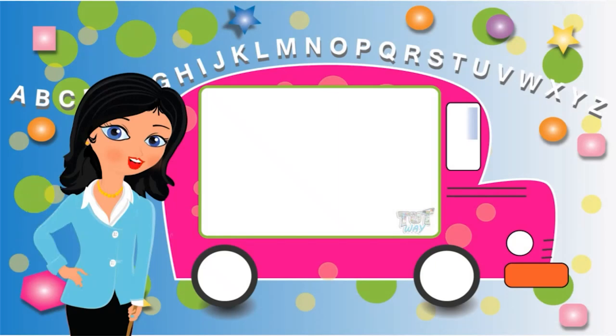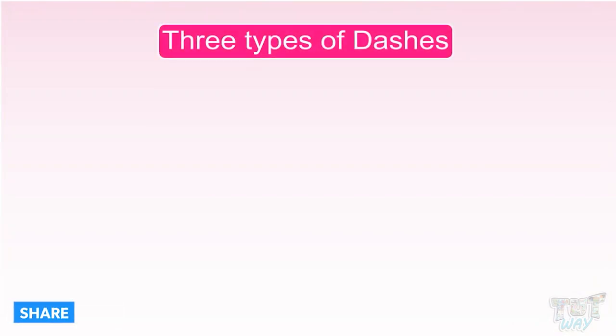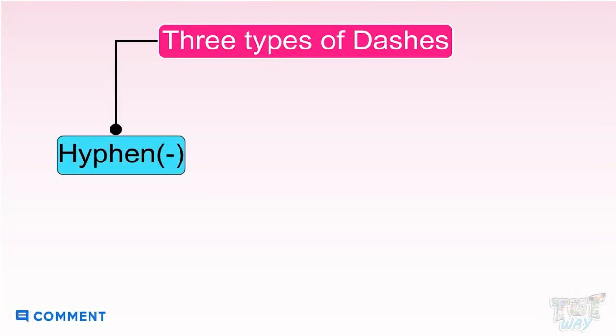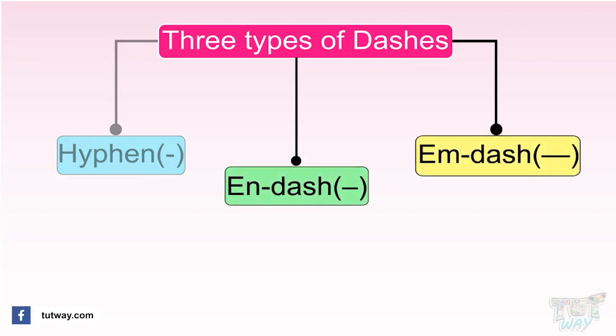Hi friends! Today we will learn about the punctuation symbols N dash and M dash. There are three types of dashes that have varying lengths. The first one, which is the smallest one, is called hyphen. We have learned a lot about hyphen in the last section. In this section, we learn about the other two dashes, N dash and M dash.